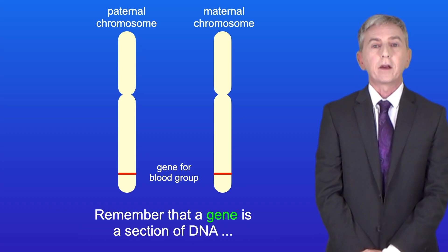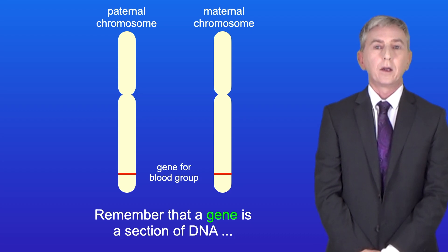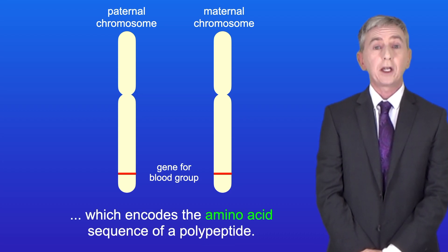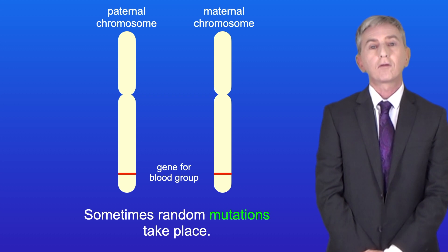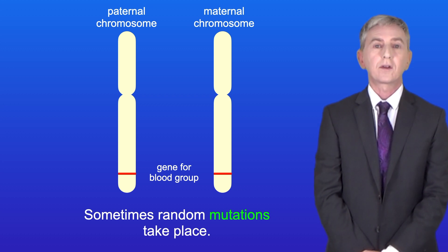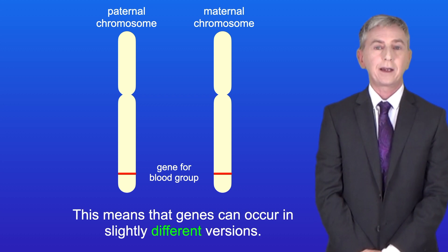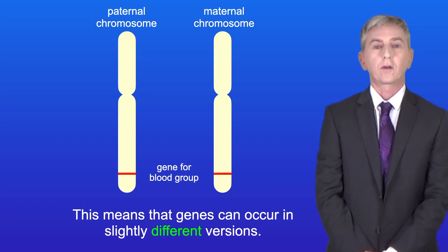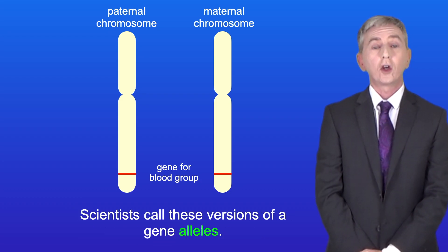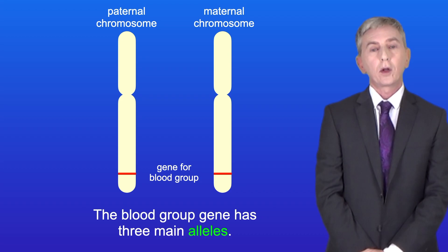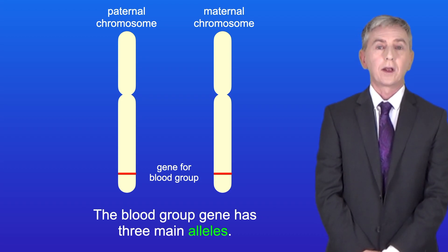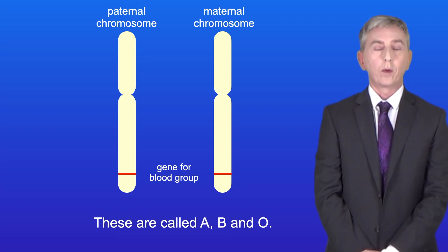Remember that a gene is a section of DNA which encodes the amino acid sequence of a polypeptide. Sometimes random mutations take place, which means that genes can occur in slightly different versions. Scientists call these versions of a gene alleles. The blood group gene has three main alleles, called A, B, and O.